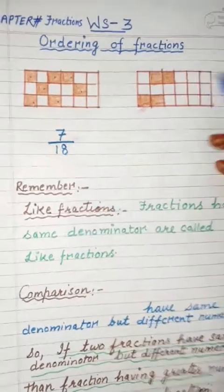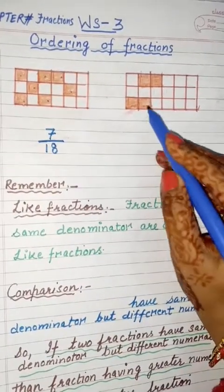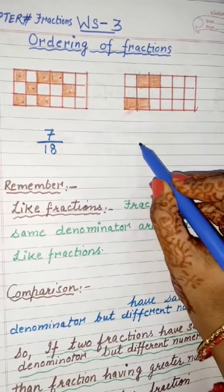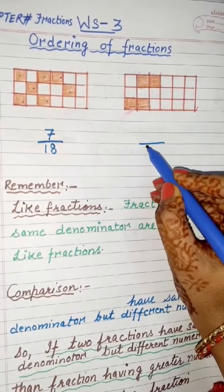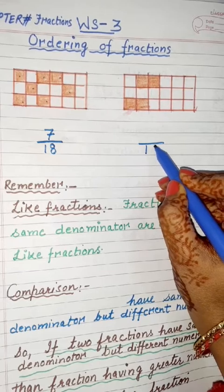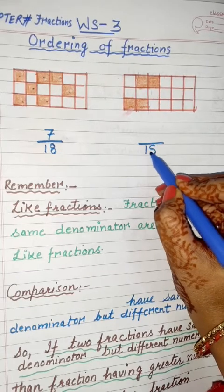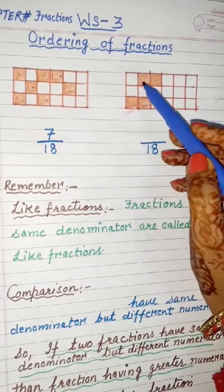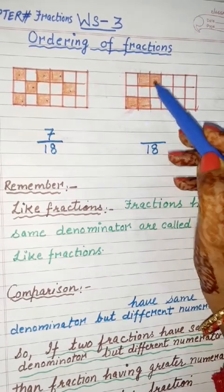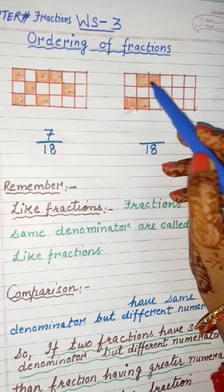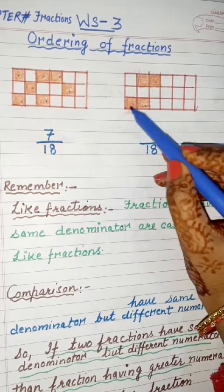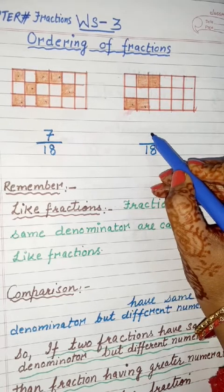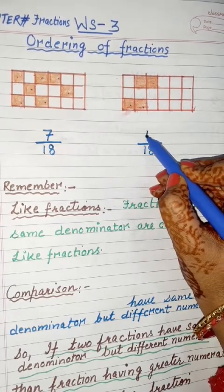In the second figure, we again have 18 total boxes, so we write 18 as the denominator. Counting the shaded boxes: 1, 2, 3, 4. We have 4 shaded boxes here, so the numerator is 4, giving us the fraction 4/18.